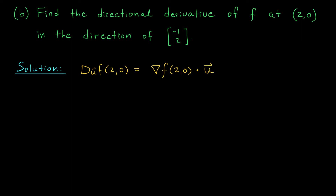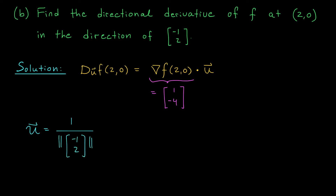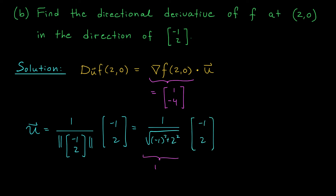From part a, we already know the gradient at (2, 0) — it's the vector (1, -4). All that remains is to find the unit vector u. We have to unitize it. Our u vector is 1 over the norm of (-1, 2) times (-1, 2). That's 1 over the square root of (-1)^2 + 2^2 times (-1, 2), which is 1/√5 · (-1, 2). So u = (-1/√5, 2/√5).